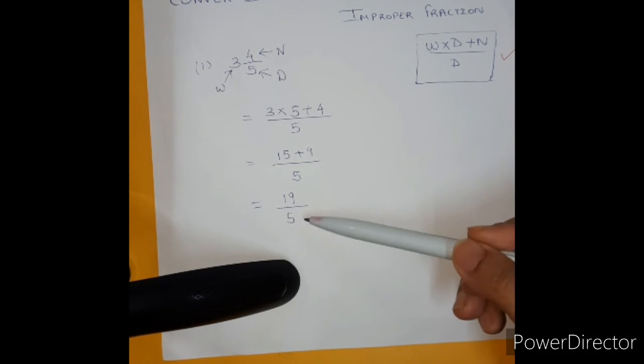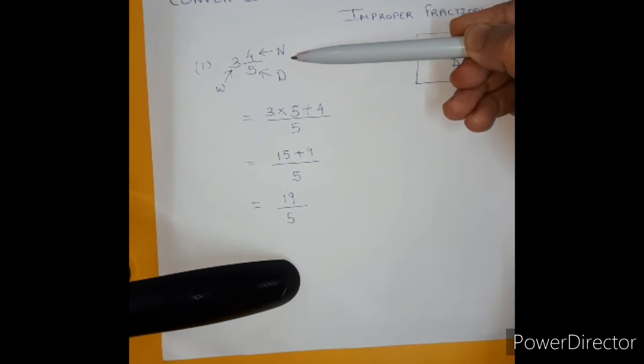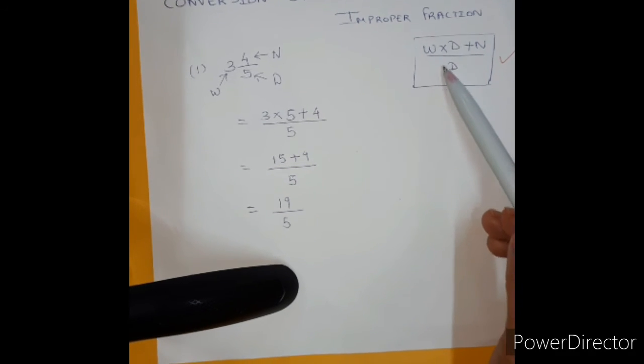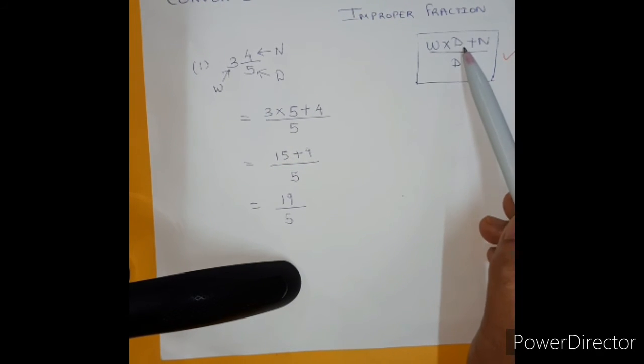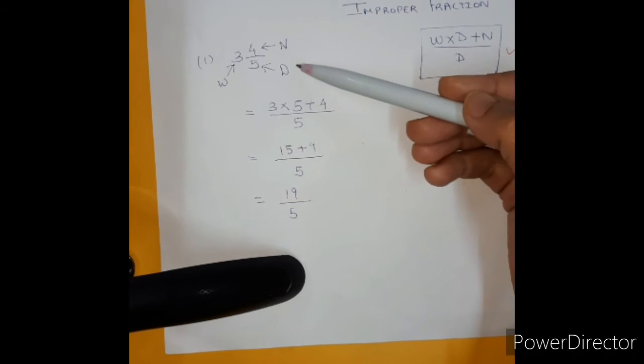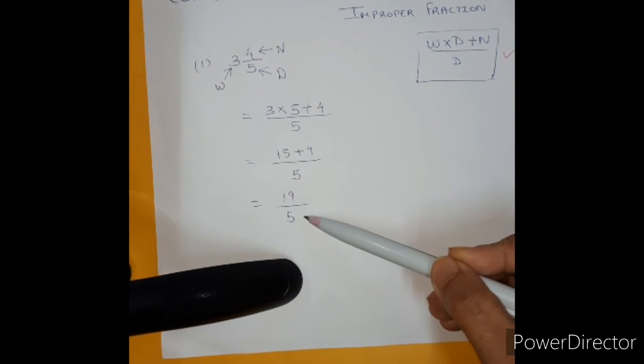Did you get an improper fraction? Yes. So we have converted a mixed fraction to an improper fraction by using this formula which is W multiplied by D plus N upon D, whole number multiplied by the denominator plus the numerator upon D. So in this way we can convert any mixed fraction to improper fraction.